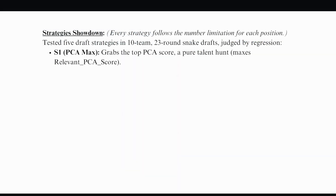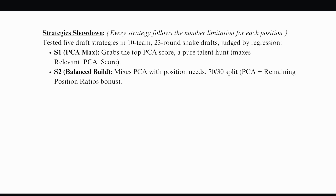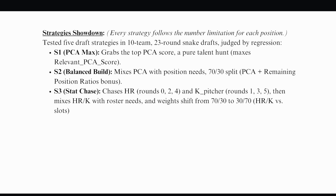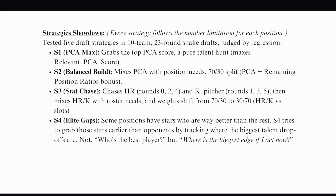Then I developed 4 strategies. S1 always chases the best PCA player. S2 is similar to S1, but also takes position numbers as a KPI. S3 focuses on picking players who might have a specifically outstanding stat, which helps the team to outperform others in those categories every week. For a simpler experiment, I only focus on home runs for batters and strikeouts for pitchers. S4 picks stars who are way better than other players in the same position, so other teams' certain positions will be weaker. Lastly, random is the baseline comparison.